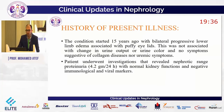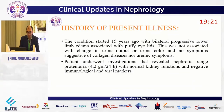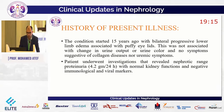The condition actually started 15 years ago, by the age of 16, with bilateral progressive lower limb edema associated with puffy eyelids. There was no change in urine output or urine color, no symptoms of collagen disease, and no urinary symptoms. Investigations revealed nephrotic-range proteinuria of 4 grams per 24-hour urine, with normal kidney functions and negative immunological and viral markers.